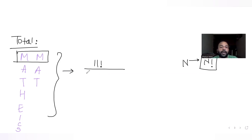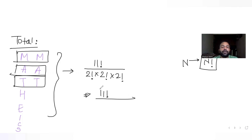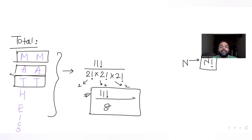M is repeating 2 times, so we divide by 2 factorial. A is also repeating 2 times, so we divide by another 2 factorial. T is also repeating 2 times, so we divide by another 2 factorial. That gives 2 × 2 × 2 = 8 in the denominator. So the total number of ways without any condition is 11 factorial upon 8.